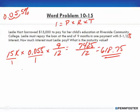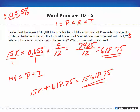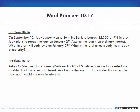The problem also asks for the maturity value. Maturity Value = Principal + Interest, so $15,000 + $618.75 = $15,618.75. That's the answer for problem 10-15.